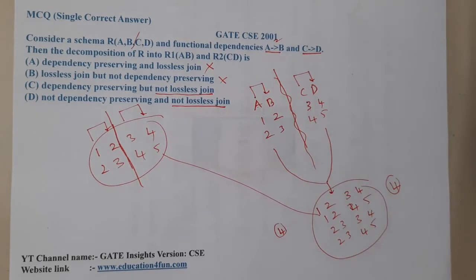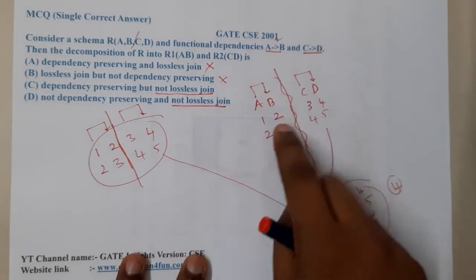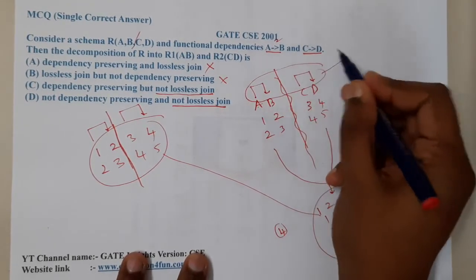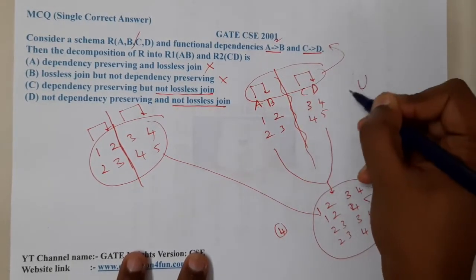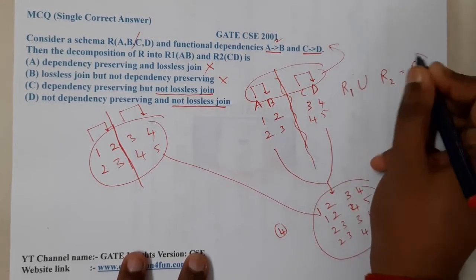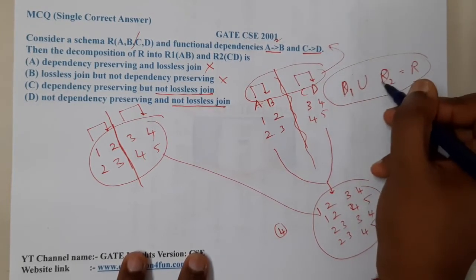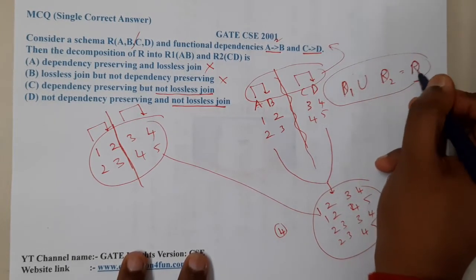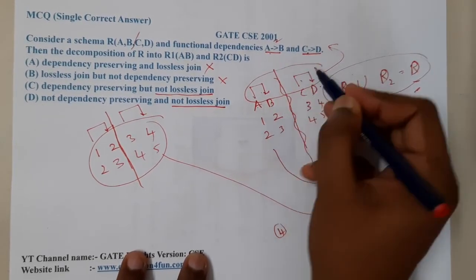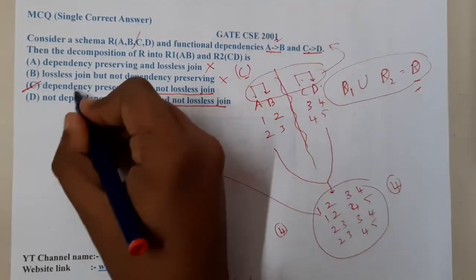Even after dividing the table, there is no issue with preserving these relations. When checking dependency preservation, we take the union of the dependencies of the decomposed relations. The dependency of R1 union the dependency of R2 should equal the dependencies of R. Since R1 gives A→B and R2 gives C→D, the union equals the original set of dependencies.